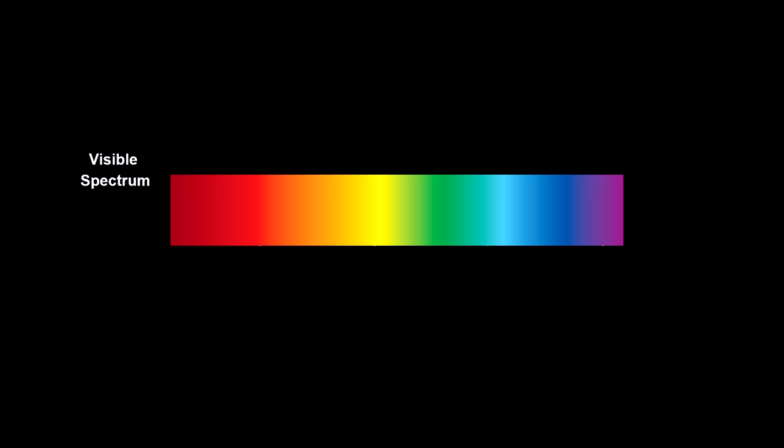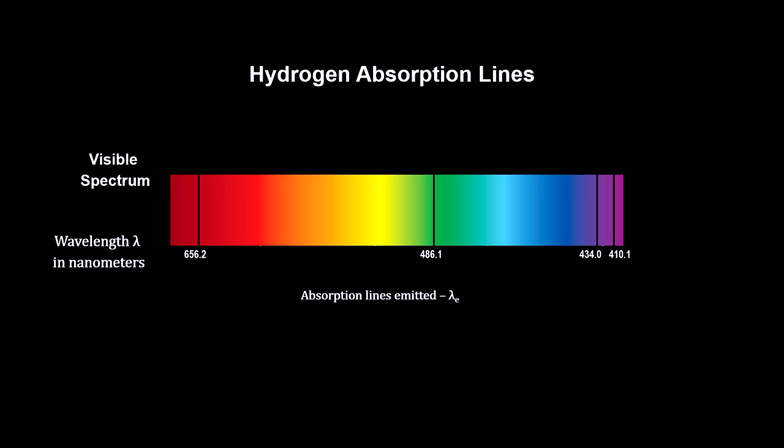The same effect works for light. Here, we have the visible spectrum from a star. Hydrogen in the star's atmosphere creates absorption lines with a unique pattern. Here's the pattern for a star at rest with respect to the observer.